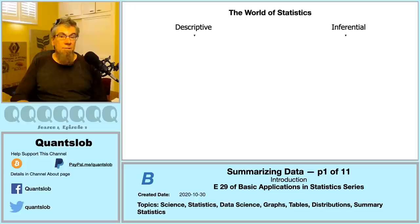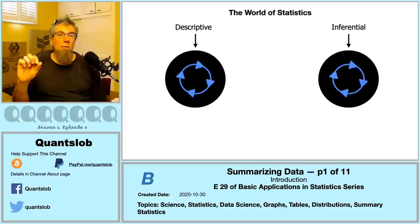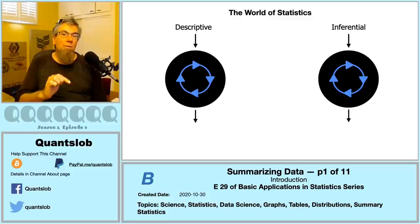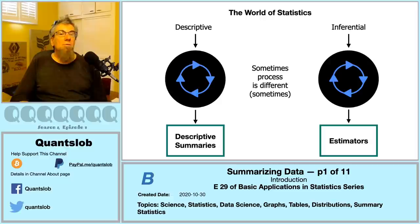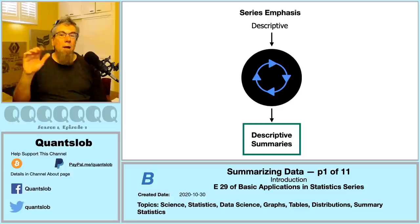However, how we actually calculate summary statistics can depend on whether we are describing data — performing descriptive statistics — or whether our intentions are to make inference. When performing inference, our ultimate objective is to calculate a statistic from our sample that can serve to estimate some property of our population. Sometimes the most precise way to do this requires a small tweak in how we calculate our statistic, and the symbol we use to notate it may be different as well.